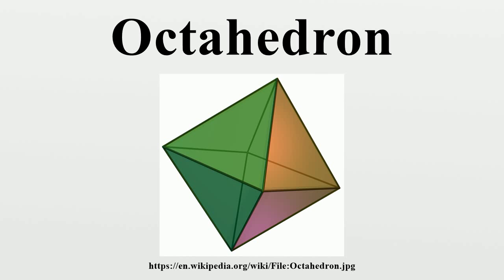The octahedron is unique among the platonic solids in having an even number of faces meeting at each vertex. Consequently, it is the only member of that group to possess mirror planes that do not pass through any of the faces. Using the standard nomenclature for Johnson solids, an octahedron would be called a square bipyramid. Truncation of two opposite vertices results in a square bifrustum.